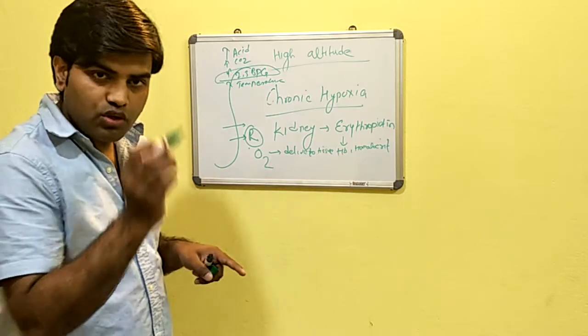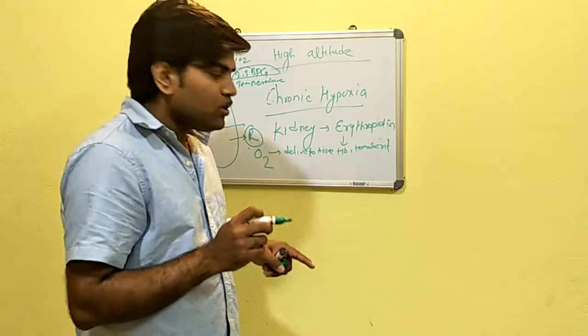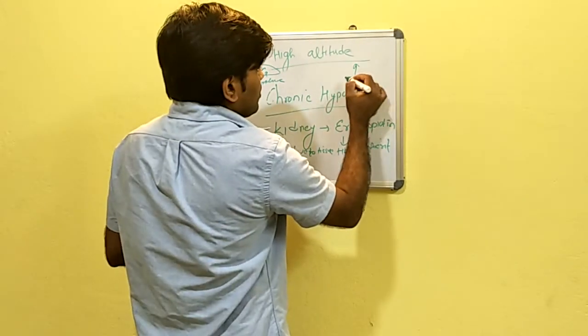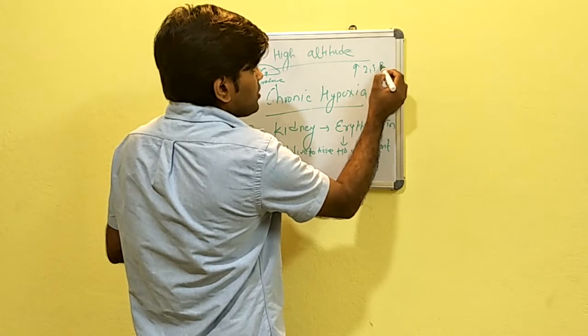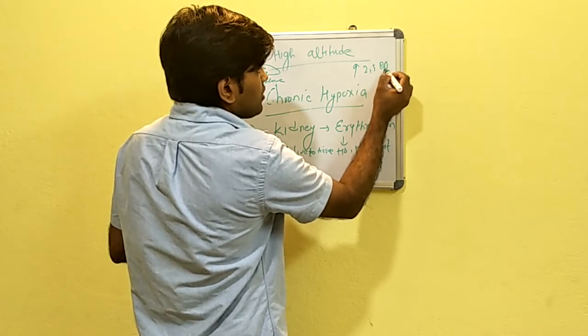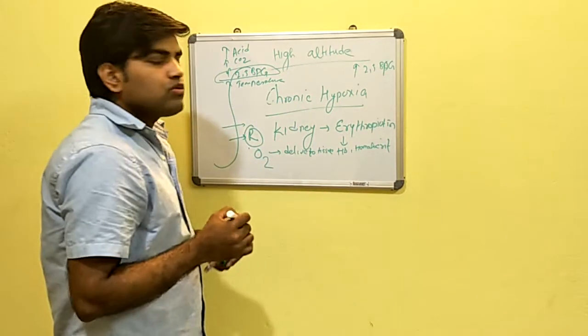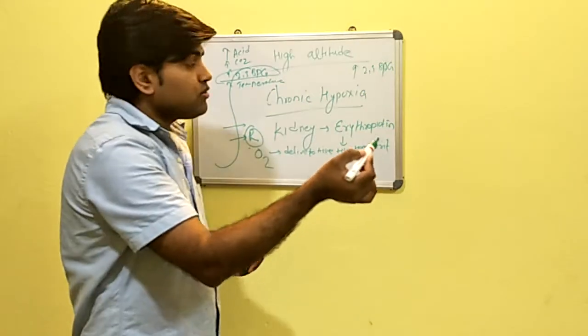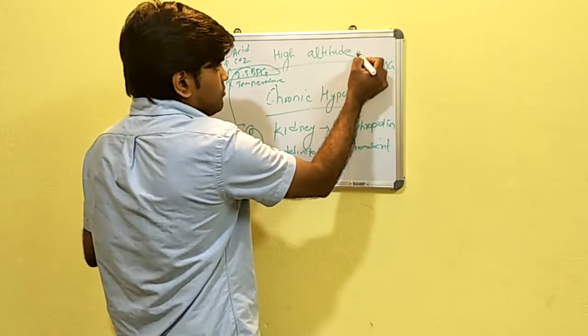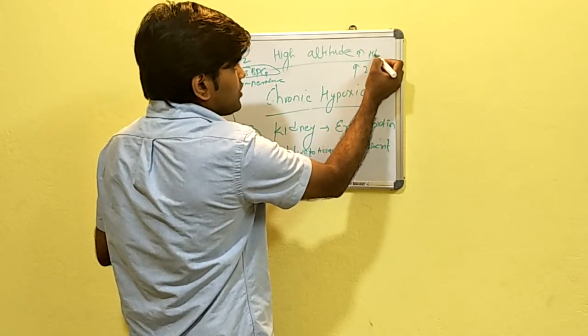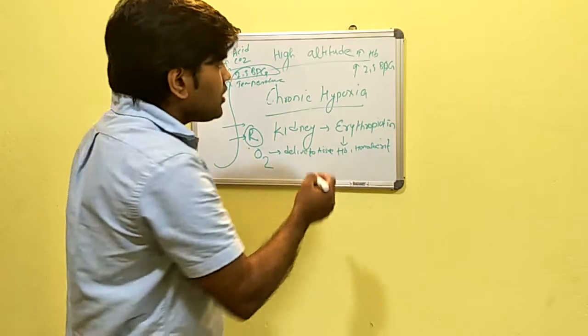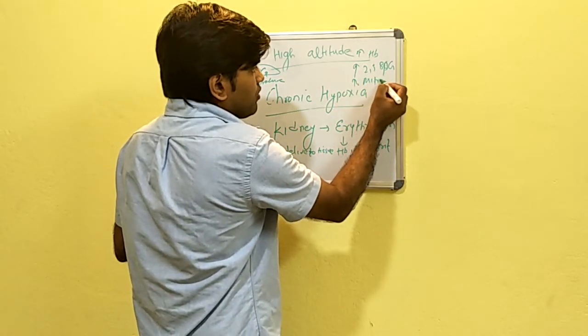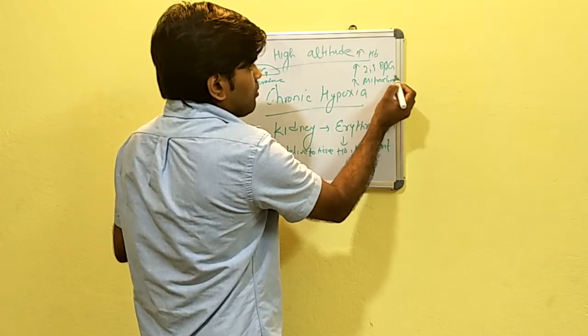So in chronic hypoxia case, there will also be increase in 2,3-BPG. We are saying that if you are going to higher altitude, there is increase in erythropoietin, which increases hemoglobin. There is also increasing 2,3-BPG and increase in mitochondria.